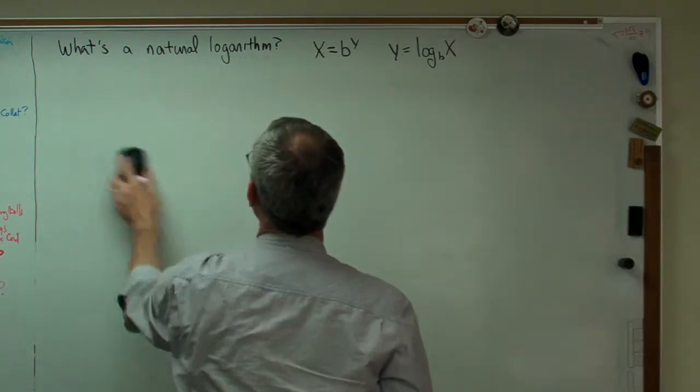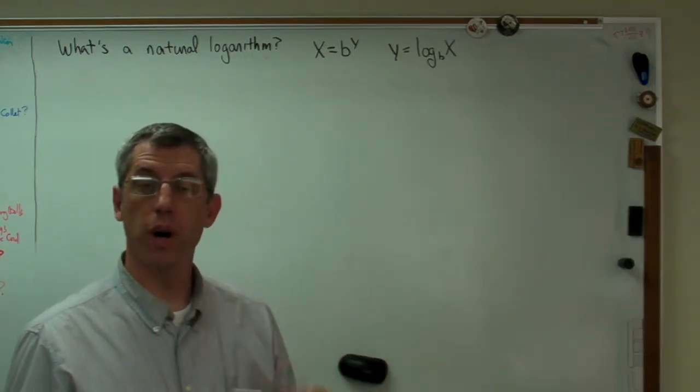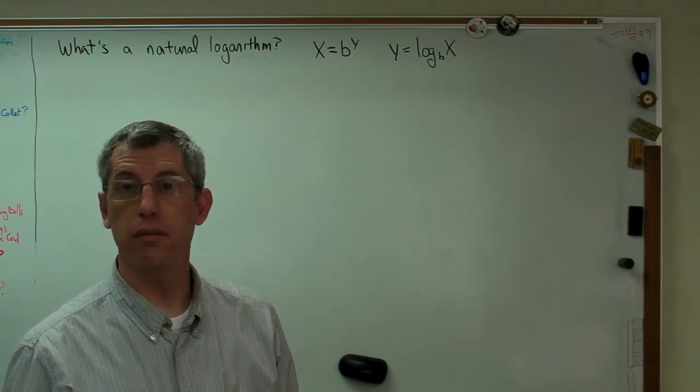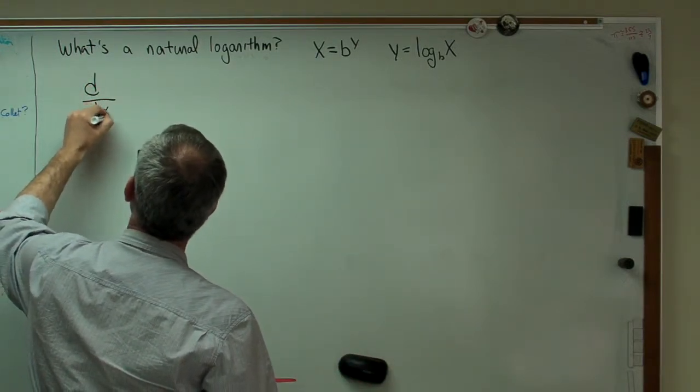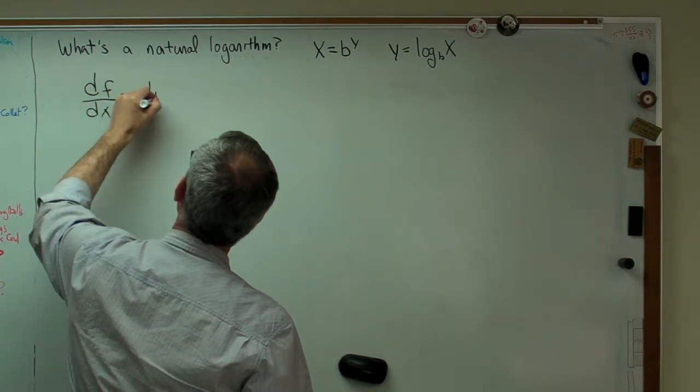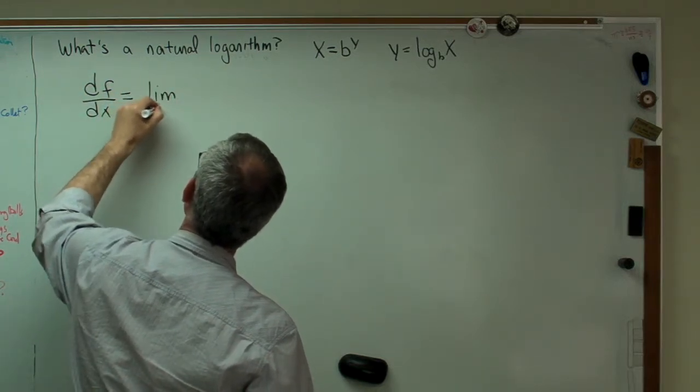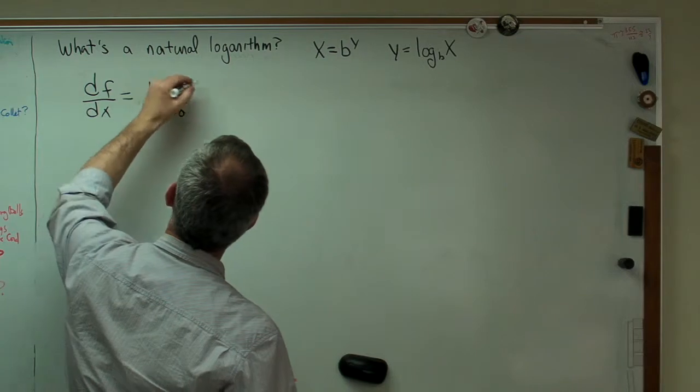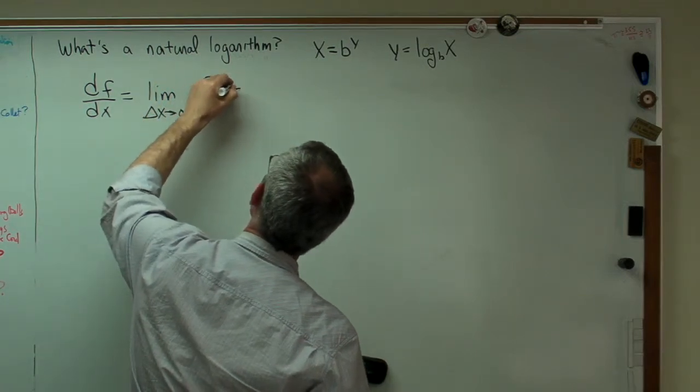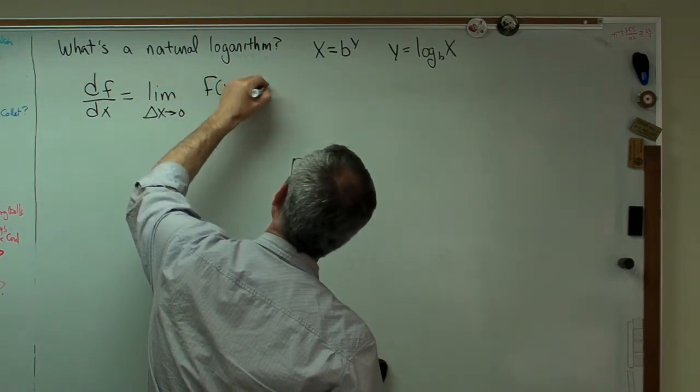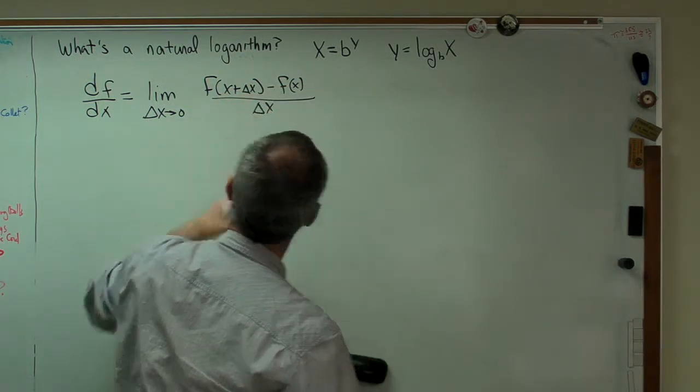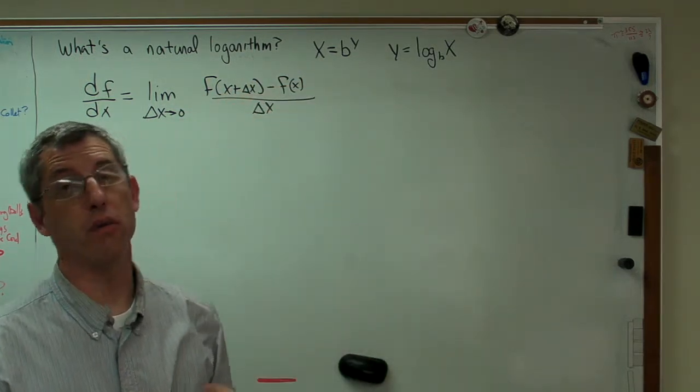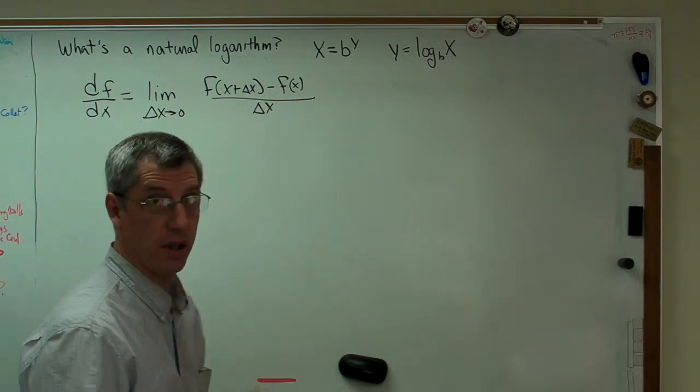What I'm going to do is I'm going to write out the definition of a derivative for you. And this is something that I'm sure you saw in a math class somewhere. I know I did. So there you go. That's the definition of a derivative. Really, it's just the definition of a slope.